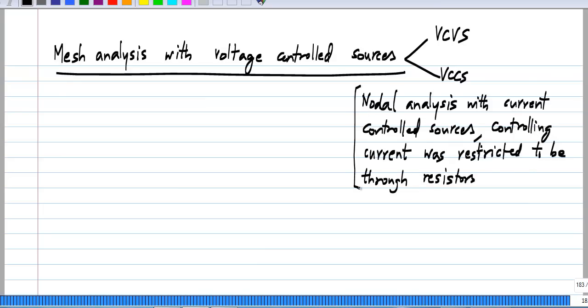Similarly in this case when we have mesh analysis with voltage controlled sources, the controlling voltage is restricted to be across a resistor.